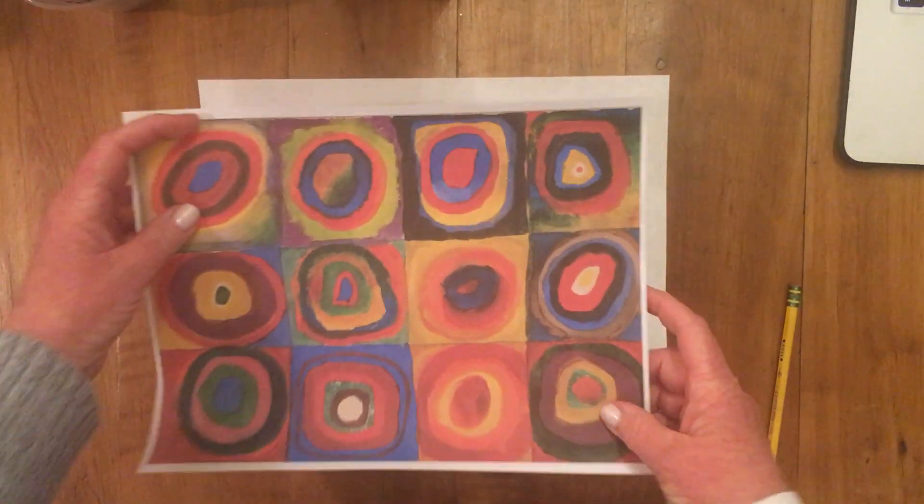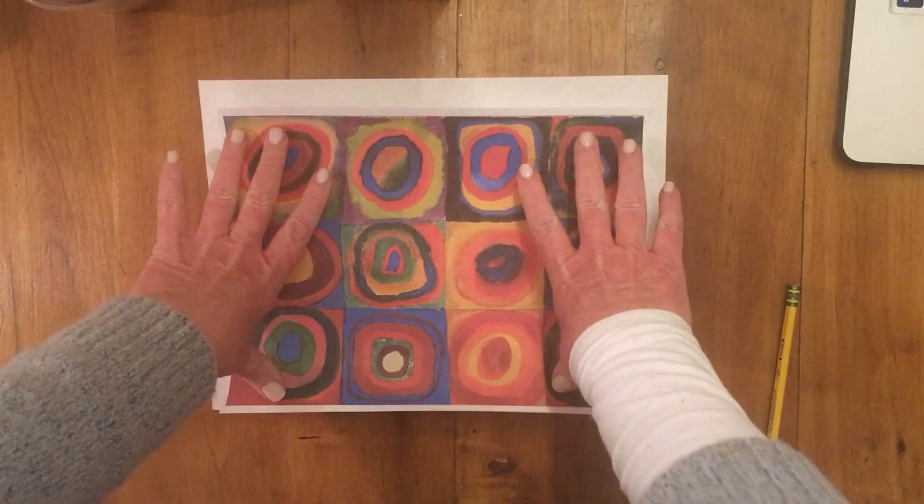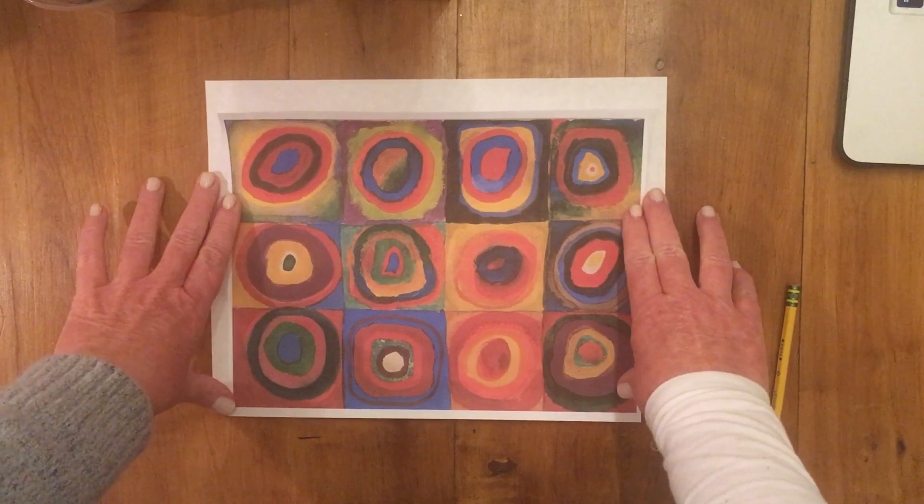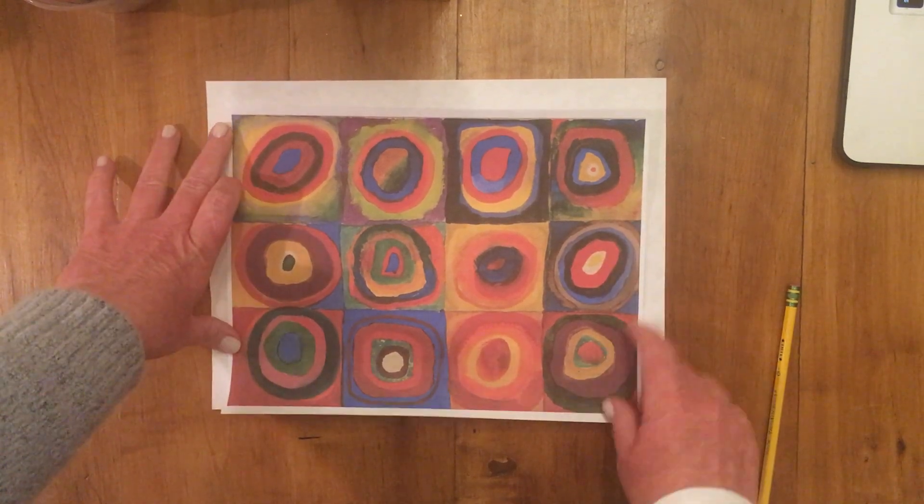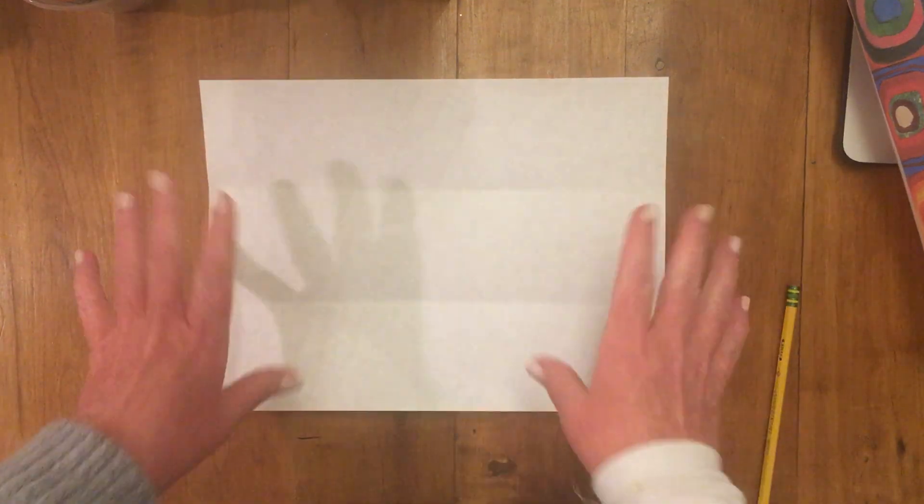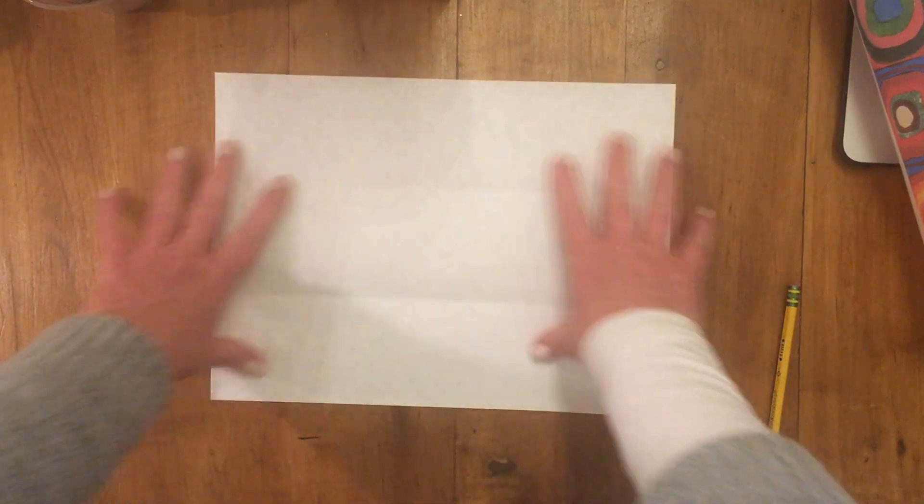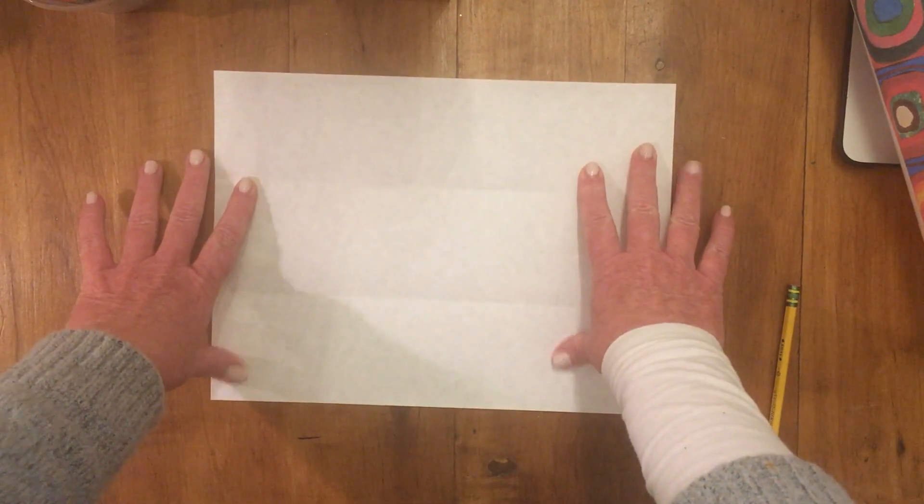Today we are going to be looking at a print by the artist Wassily Kandinsky. It's called Squares with Concentric Circles. To start this project, I'm just going to show you how to fold up your paper.